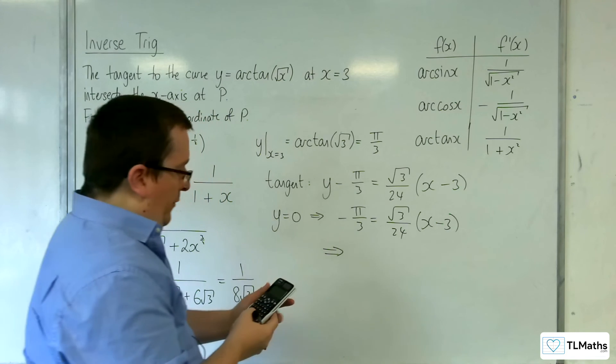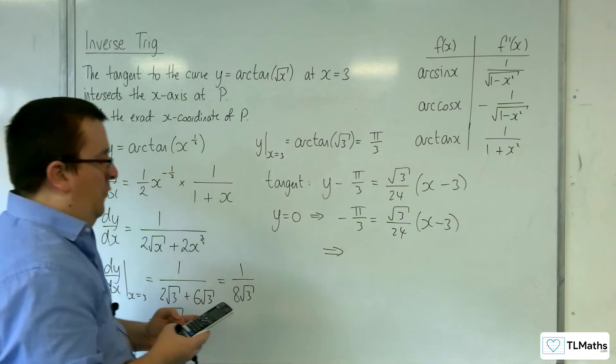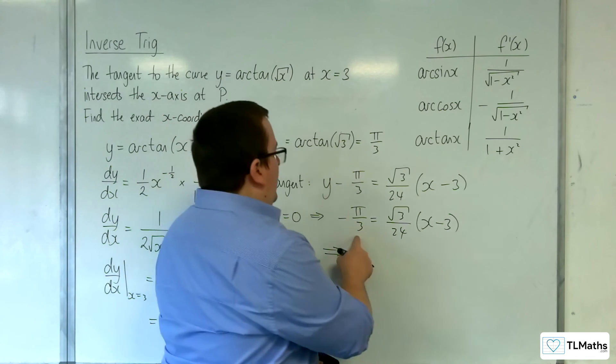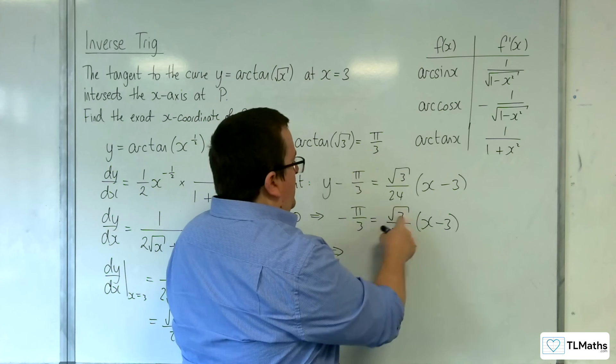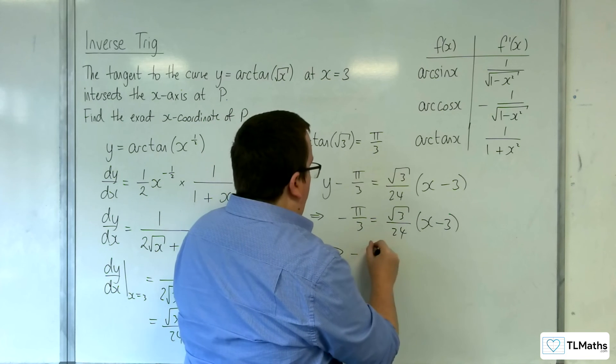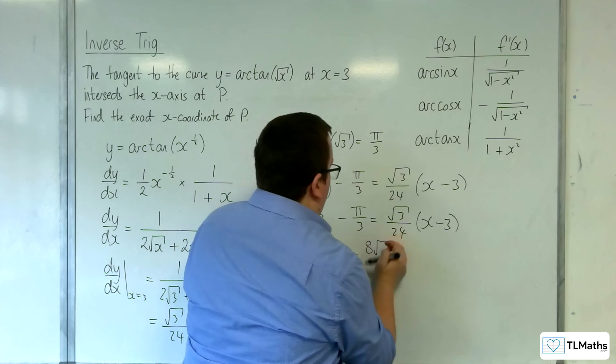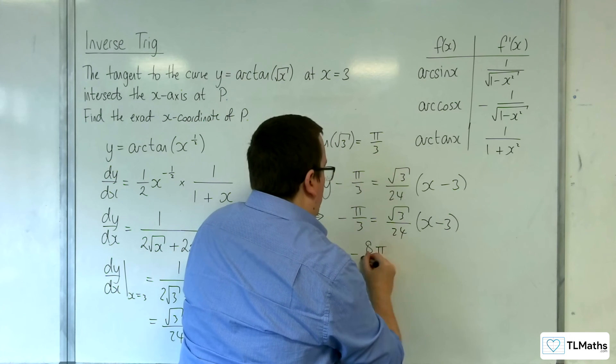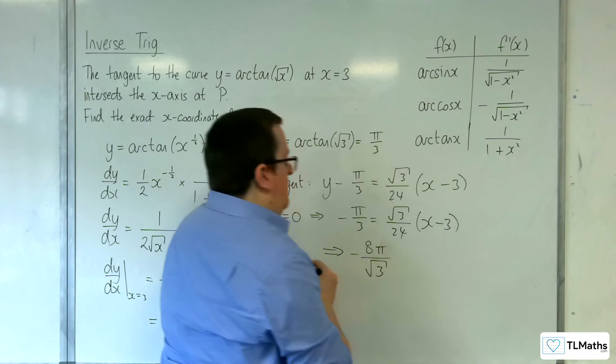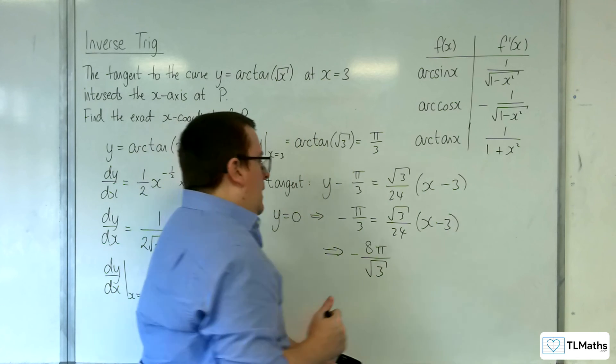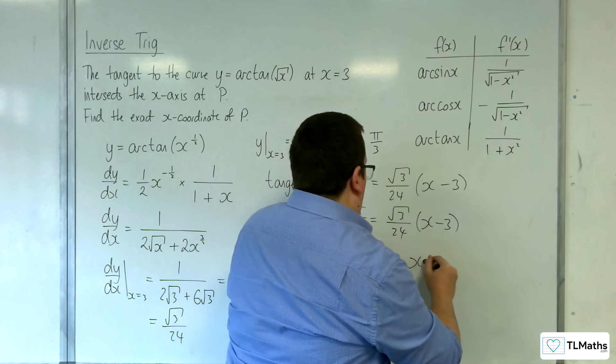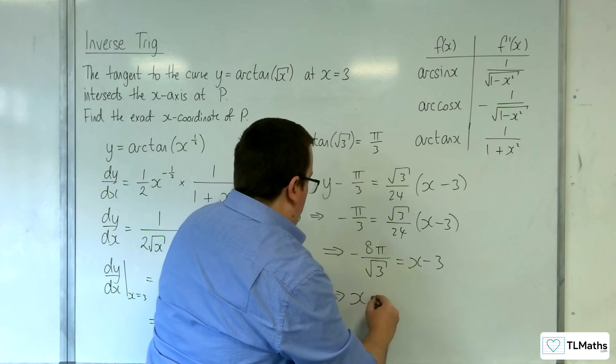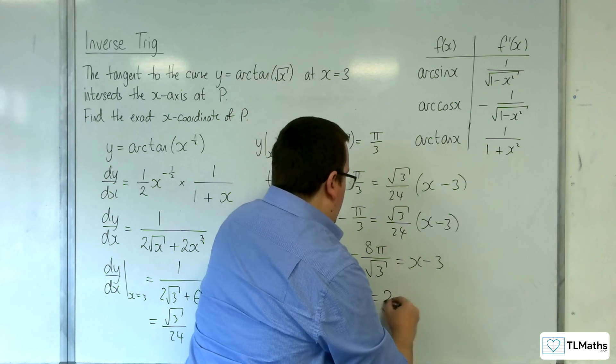So I'm going to multiply both sides by 24, so that's going to get us minus 8 pi, then divide by root 3. So minus 8 pi over root 3 is equal to x take away 3. So x is going to be equal to 3 take away 8 pi over root 3.